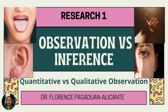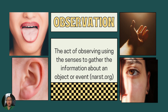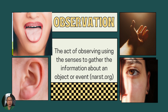Good day everyone! Let's talk about observation and inference. What is the difference? Observation is the act of observing using the senses to gather information about an object or event. You use your tongue to identify the taste of an object, your ears to identify loud or soft sounds, your hands to identify texture, whether smooth or rough, your eyes to see measurements with instruments like a ruler, and your nose to identify the smell of an object.